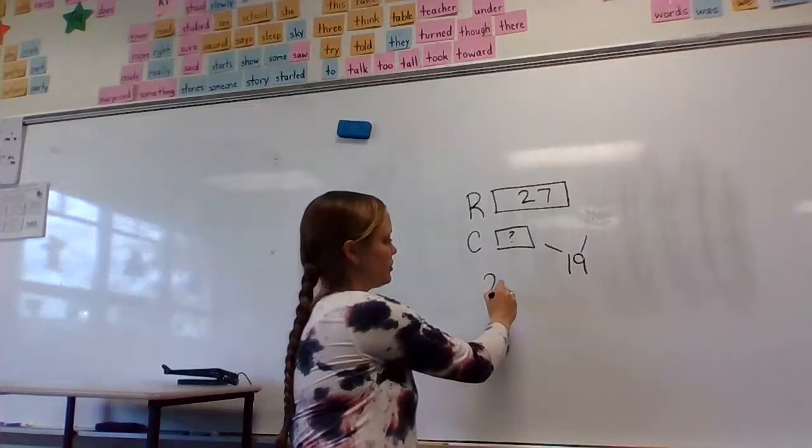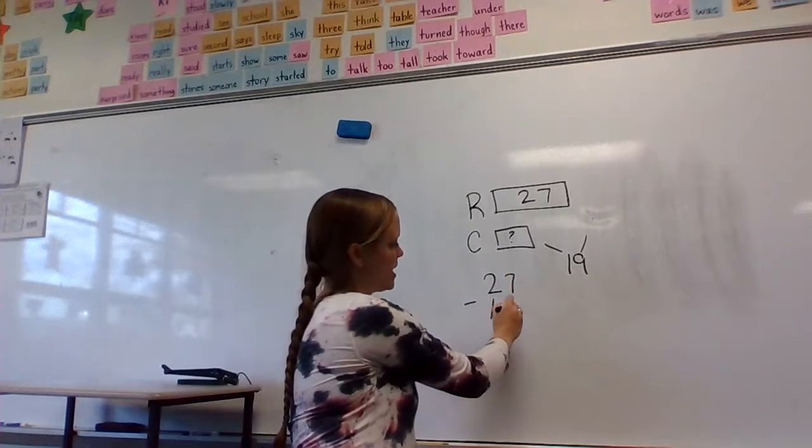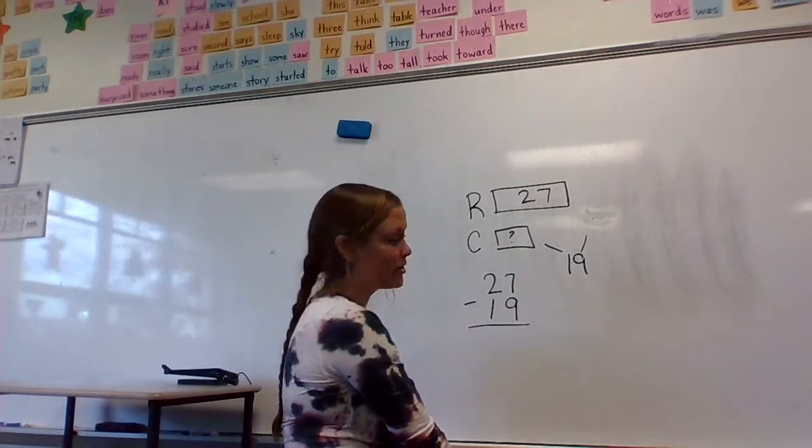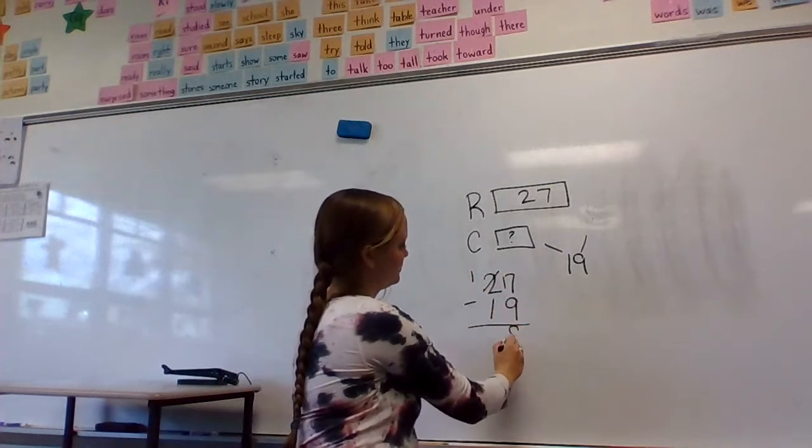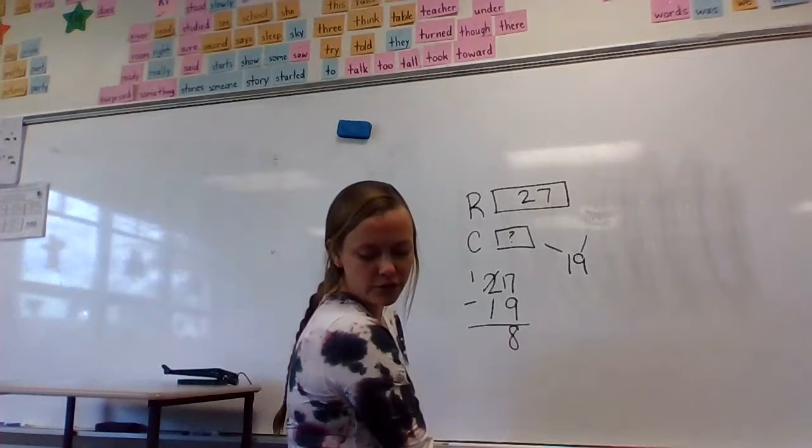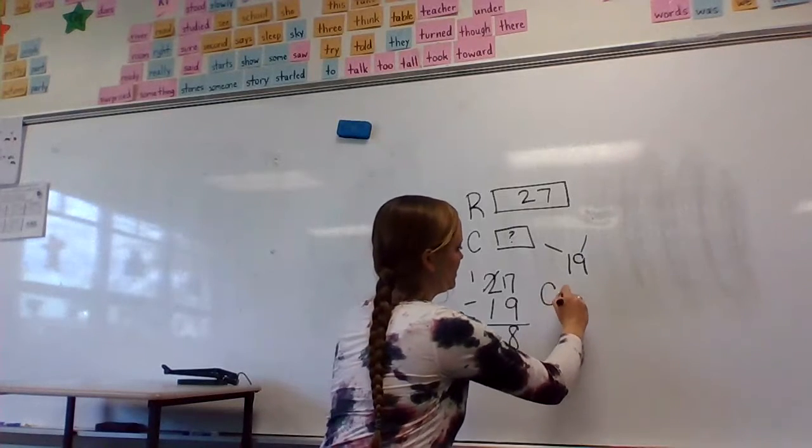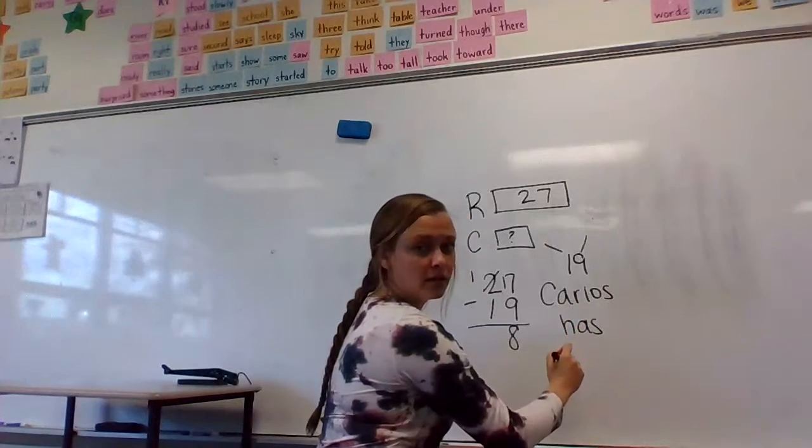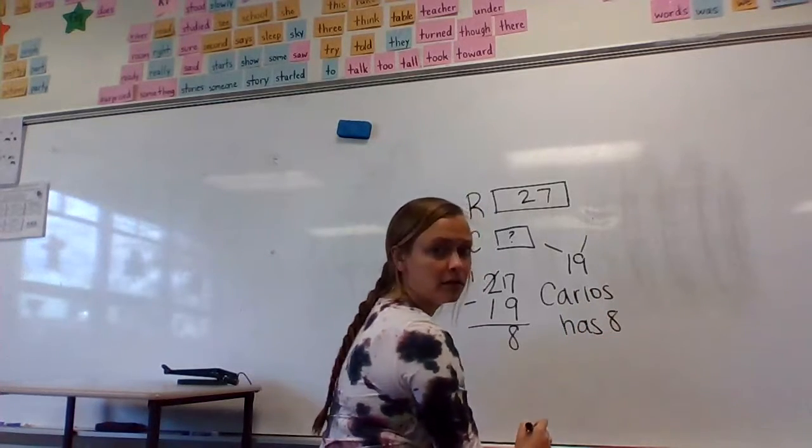Subtraction. You're gonna take 27 take away 19 and what is that answer? Eight.